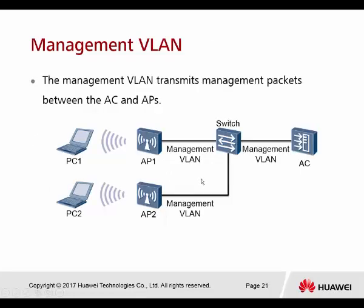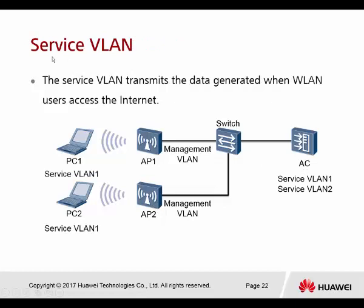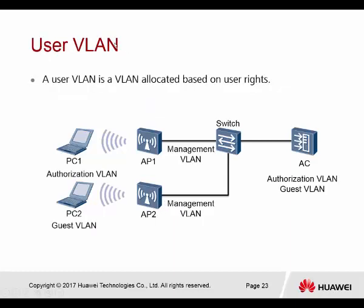VLAN application in WLAN service: the first is the management VLAN. When configuring, take note of what VLAN you want to configure for your AP and controller — either using the same VLAN for all APs and AC, or different VLANs. The service VLAN is used by guests; you can create an additional VLAN for guest access. The user VLAN is for staff or employees and has different authorization levels.